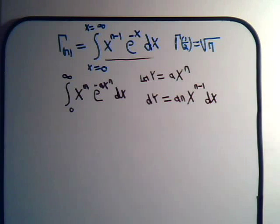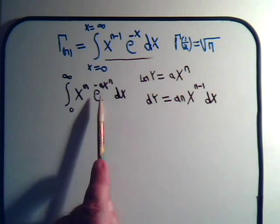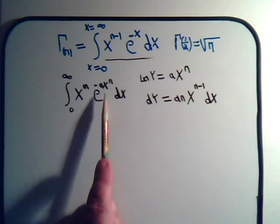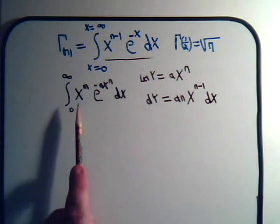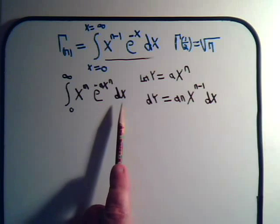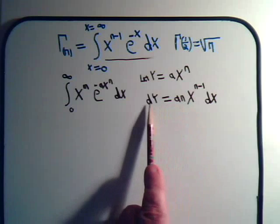Then dy, that will equal a times n times x to the n minus 1 dx. Now when we make this variable change right here, this will become e to the minus y. So now we want to express the rest of the integral in terms of y and dy.